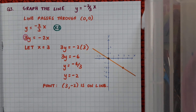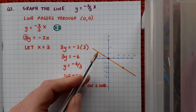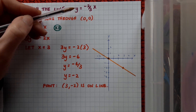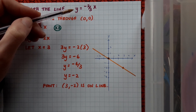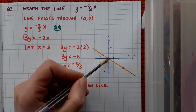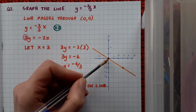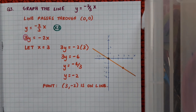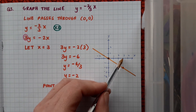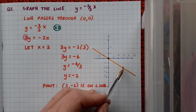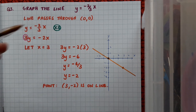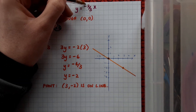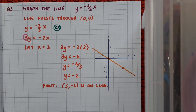It's interesting to compare this final diagram to the original equation. We know from the equation that the line should have a slope of minus 2 over 3. Looking at the diagram, for every three boxes we move across, we go down two boxes — so the slope is maintained in the diagram. We can see the coefficient of x clearly there.